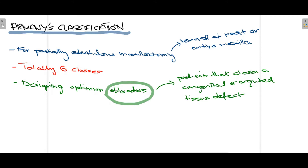Aramany's classification of maxillectomy is mainly used in prosthodontics for designing an optimum obturator. An obturator is a prosthesis used to close a congenital or acquired tissue defect. For example, when a patient is undergoing surgery on the maxilla, you have to plan how the area where tissue has been removed will be closed. So before surgery, you design an obturator in your mind, and according to that plan, you perform the procedure — keeping in mind how the defect will be closed — which helps in designing an optimum obturator.